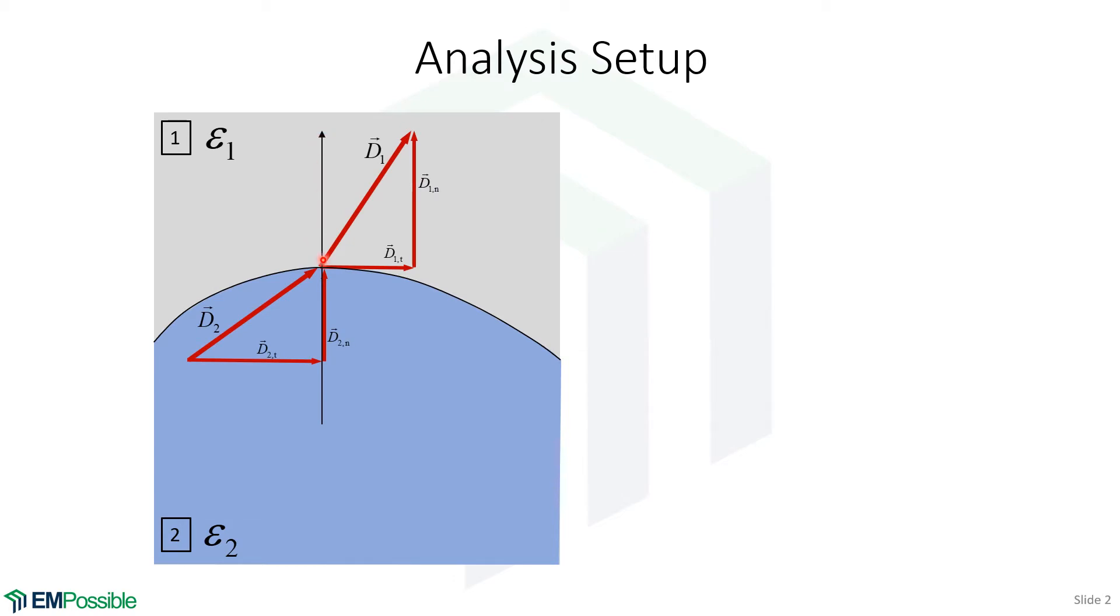So we can set up this vertical line. This is the surface normal. And then we can write the electric flux density on both sides of the interface and decompose it into its normal and tangential components on both sides of the interface.